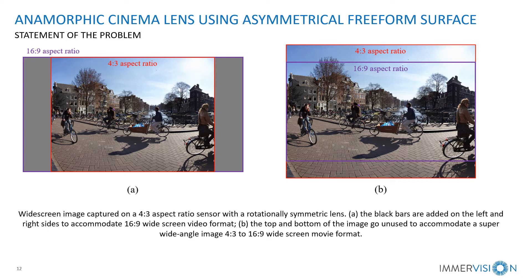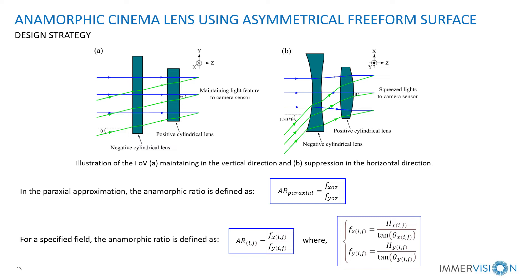An anamorphic lens should be a good means to provide a 16x9 aspect ratio in a 4x3 aspect format without sacrificing resolution. The feature of the anamorphic lens is compressing horizontal information from the scene while maintaining the same vertical information. As shown in this figure, it comprises two groups of optical elements with double-curvature surfaces, which have different radii of curvature in two perpendicular symmetrical planes. The lens group has no power in the Y-Z plane and optical power in the X-Z plane. The anamorphic ratio is defined as the ratio of the optical focal length in the X-Z and Y-Z planes in the paraxial approximation.